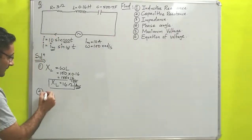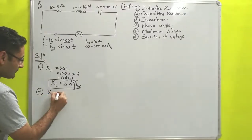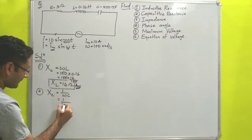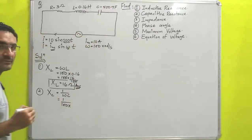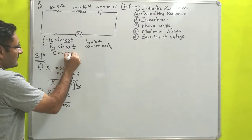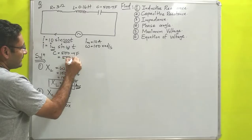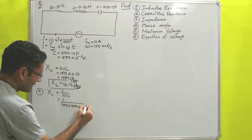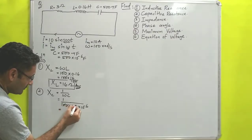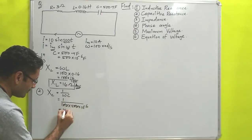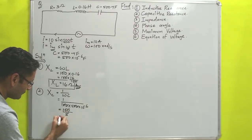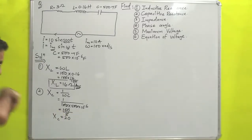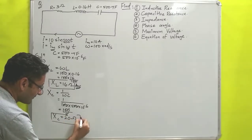Next is capacitive reactance XC. Its equation is XC = 1/(ωC). Here ω = 100 and capacitance = 500 microfarad = 500 × 10⁻⁶ farad. So XC = 1/(100 × 500 × 10⁻⁶). Simplifying, four zeros cancel giving 100/5 = 20 ohm. Reactance is one type of resistance, so the unit is ohm. That is answer number 2.